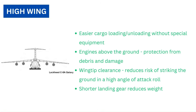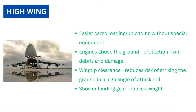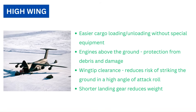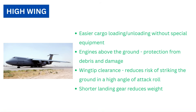High wing design. Most military transport aircraft have high wings so that the fuselage can be placed close to the ground. This allows the loading and unloading of cargo without special ground handling equipment. In a high wing, the engines are well above the ground. This protects the engines and propellers from debris and foreign object damage on unimproved fields. Also, the wingtips are not as likely to strike the ground in a high angle of attack roll position. As ground clearance is not an issue, the landing gear can be made shorter and hence less heavy.